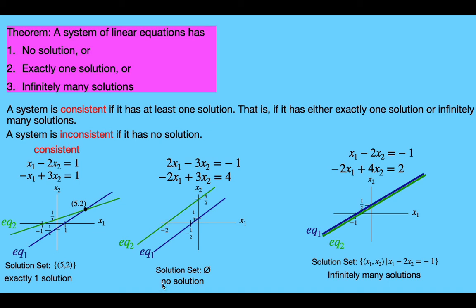Back to our examples: the first system had exactly one solution, so it was consistent. The second had no solution, so it was inconsistent. The third had infinitely many solutions, so it was consistent. That's all for this video — see you next time, thanks for watching.